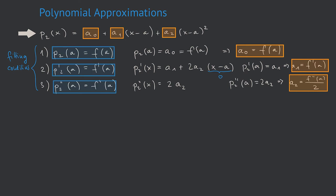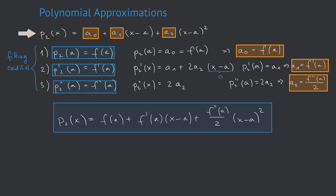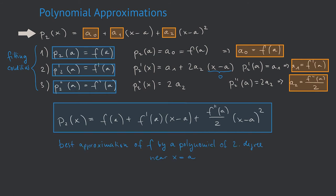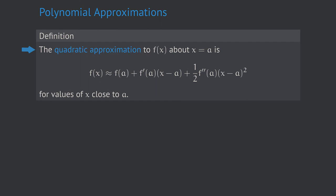Now we have all components to build the concrete formula for p2: p2(x) equals f(a) plus f'(a) times (x minus a) plus f''(a) divided by 2 times (x minus a) squared. That is the best polynomial of second degree by which we can approximate the function f around the value a. The quadratic approximation to f(x) about x equals a is f(x) approximately equal to f(a) plus f'(a)(x minus a) plus one-half f''(a)(x minus a) squared, for x close to a.